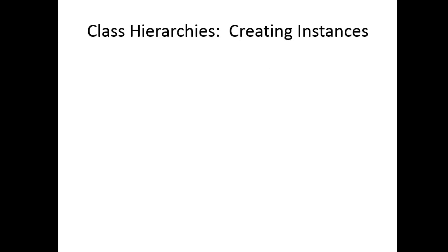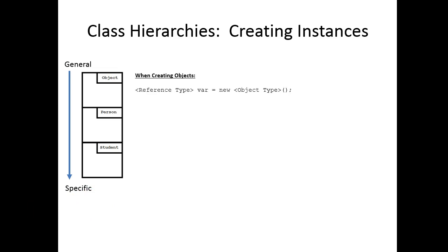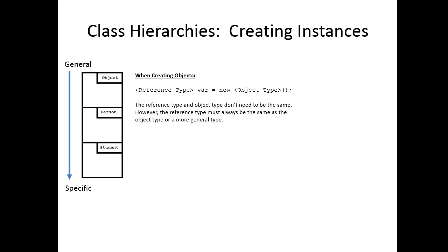Now let's talk about how we create instances of classes. To facilitate the next couple of slides, we're going to imagine a simple class hierarchy: a student is a person, a person is an object — general to specific. When creating objects, we want to think about both the left and the right side of the line of code. The left side represents the reference type, and the right side represents the object type. The reference type and object type don't need to be the same; however, the rule is the reference type must always be the same as the object type or a more general type.